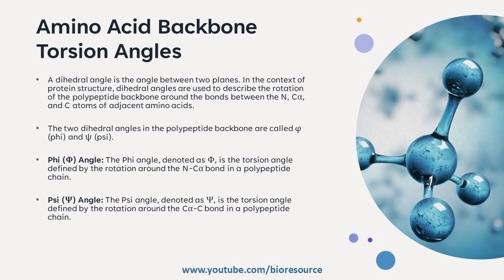The Phi angle measures the rotation about the bond between the nitrogen atom and the alpha carbon of an amino acid and the carbon atom and nitrogen atom of the next amino acid. Whereas the Psi angle measures the rotation about the bond between the alpha carbon of one amino acid and the carbon atom and nitrogen atom of the next amino acid.